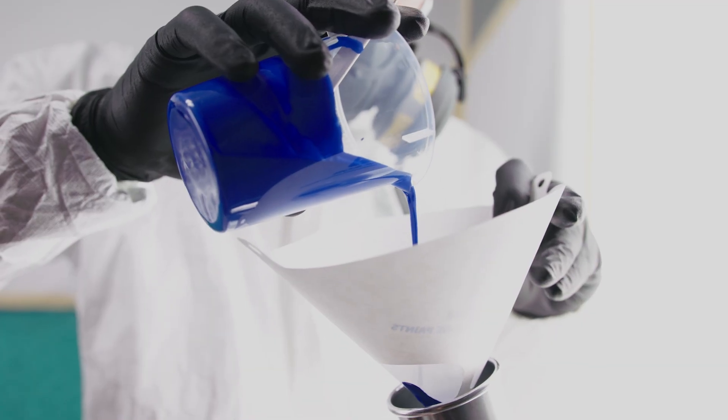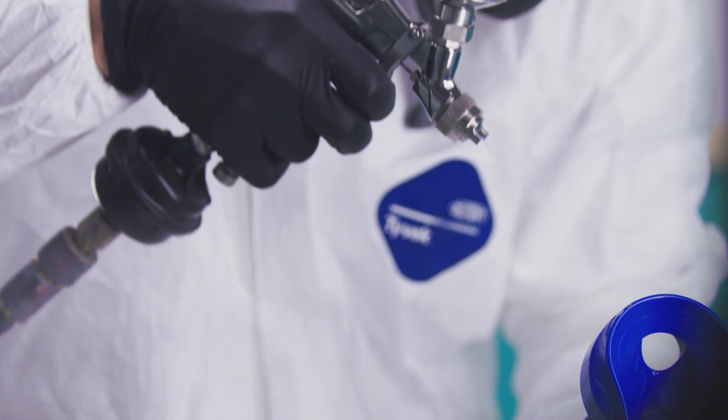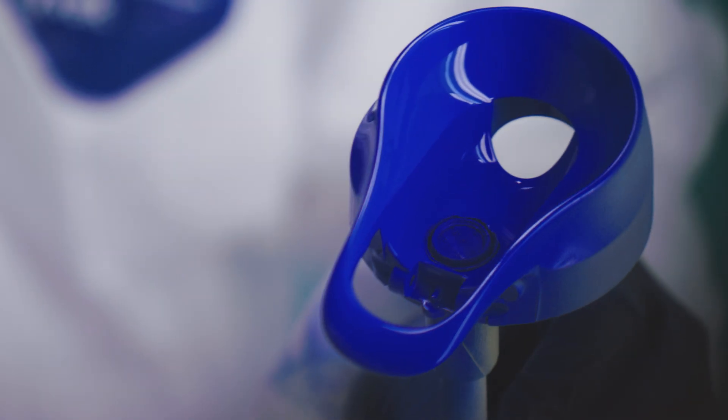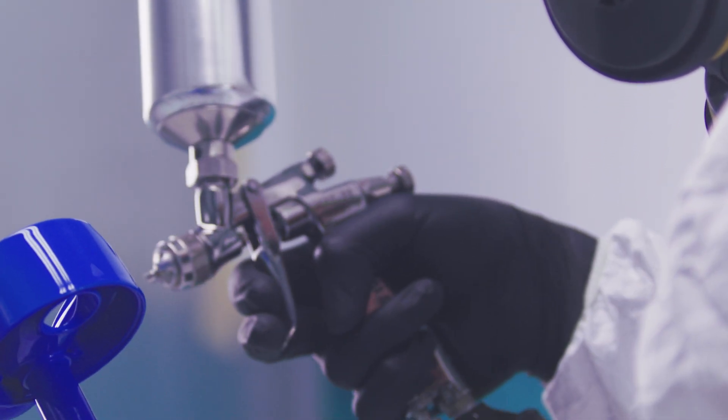If you require a specific color for your part, you can choose to have SLA parts painted. Painting offers multiple surface finish options like matte, semi-gloss, glossy, and soft touch.